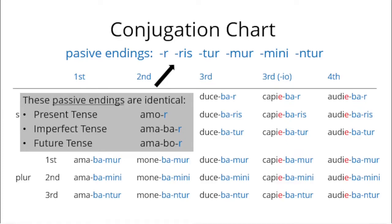The passive endings are identical for the whole present system. The present tense amor, I am loved. The imperfect tense amabar, I was being loved. And the future tense amabor, I will be loved.